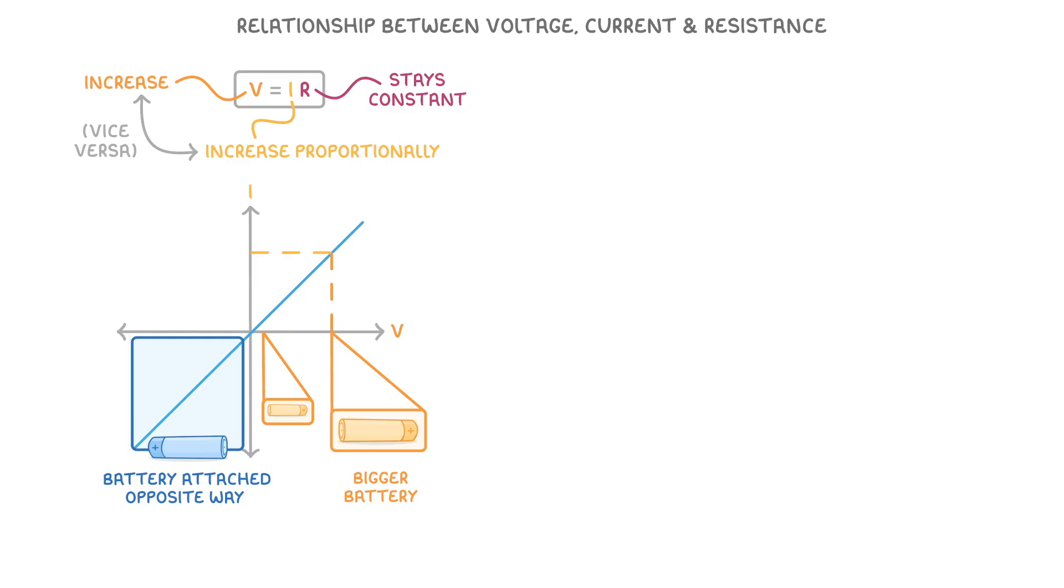We get these nice straight lines in circuits that contain only wires or resistors. Because for these circuits, the resistance stays constant the entire time, which remember was the requirement we mentioned earlier.